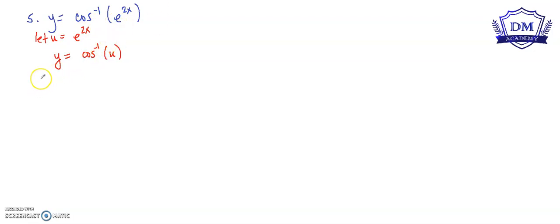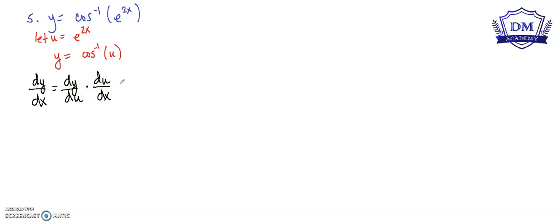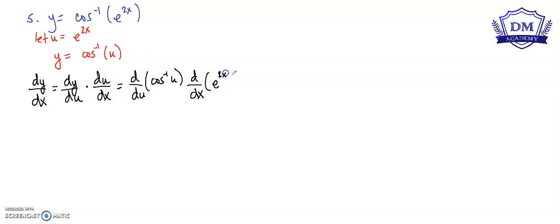Using the chain rule, dy/dx is equal to the derivative of y with respect to u, times the derivative of u with respect to x. Substituting, y is the inverse cosine of u, multiplied by d/dx of e^(2x).